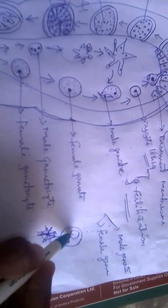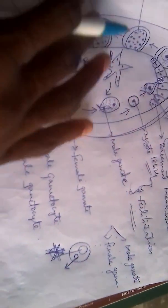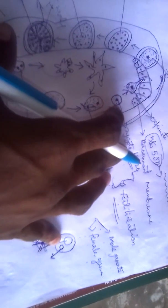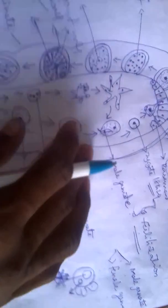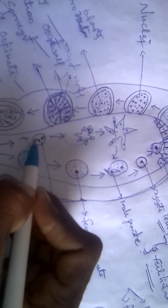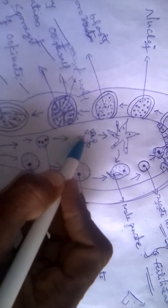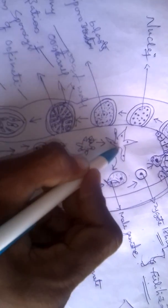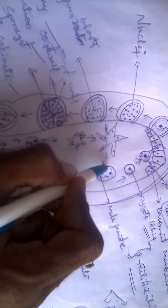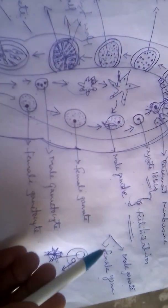In the male gamete, the nucleus undergoes several mitotic divisions. After the nucleus divides, the cytoplasm will burst and produce some extra surface, extending the body of the male gamete. These extensions are produced due to the formation of the male gamete. Male gamete formation is now complete.